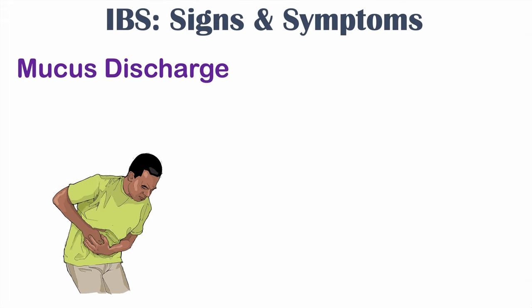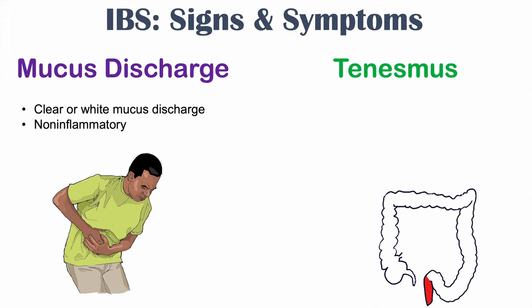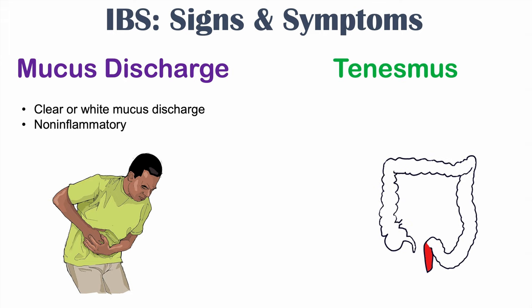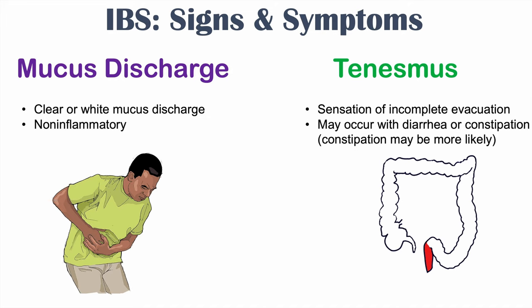Patients with IBS can also have issues with mucus discharge. This is often a clear or white mucus and it is non-inflammatory in nature. They can also have issues with tenesmus, which is a sensation of incomplete evacuation. We can see this with patients who have predominant diarrhea or predominant constipation, although constipation is more likely to produce a sensation of tenesmus.